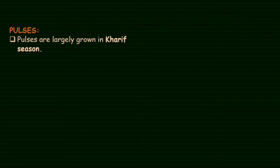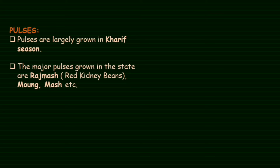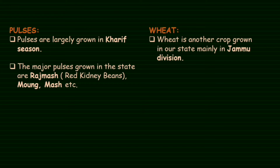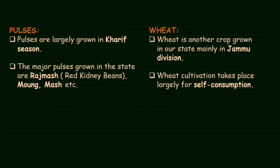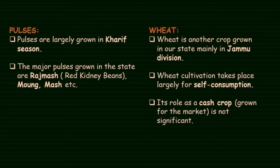Pulses are largely grown in the Kharif season. Wheat cultivation takes place largely for self-consumption. While some people use wheat as a cash crop for sale in the market, its most important role remains self-consumption rather than commercial sale.